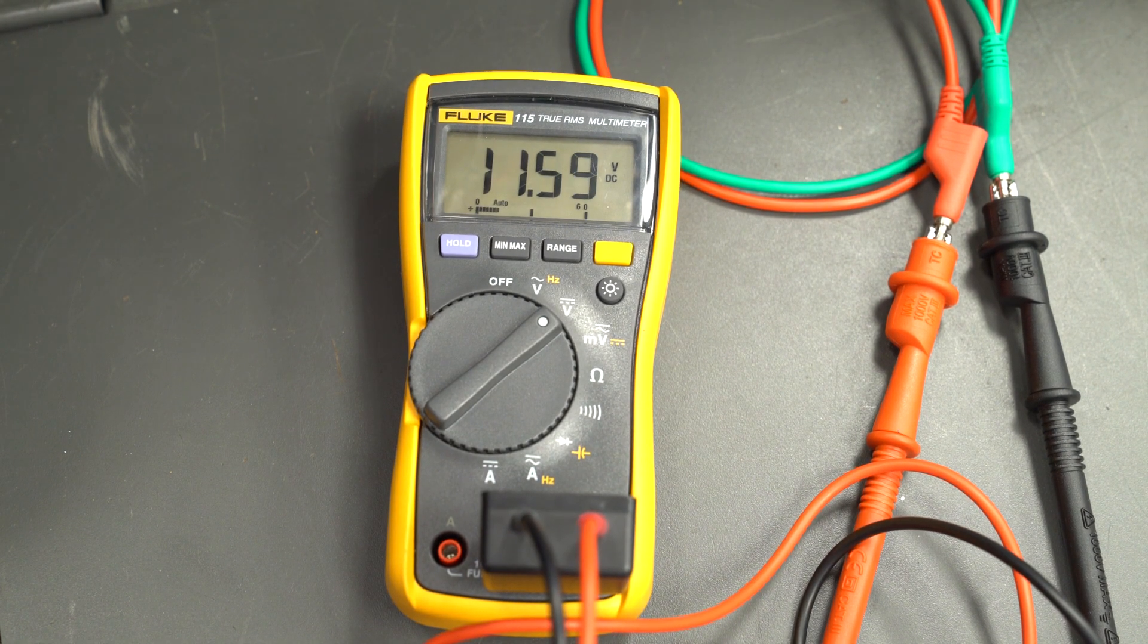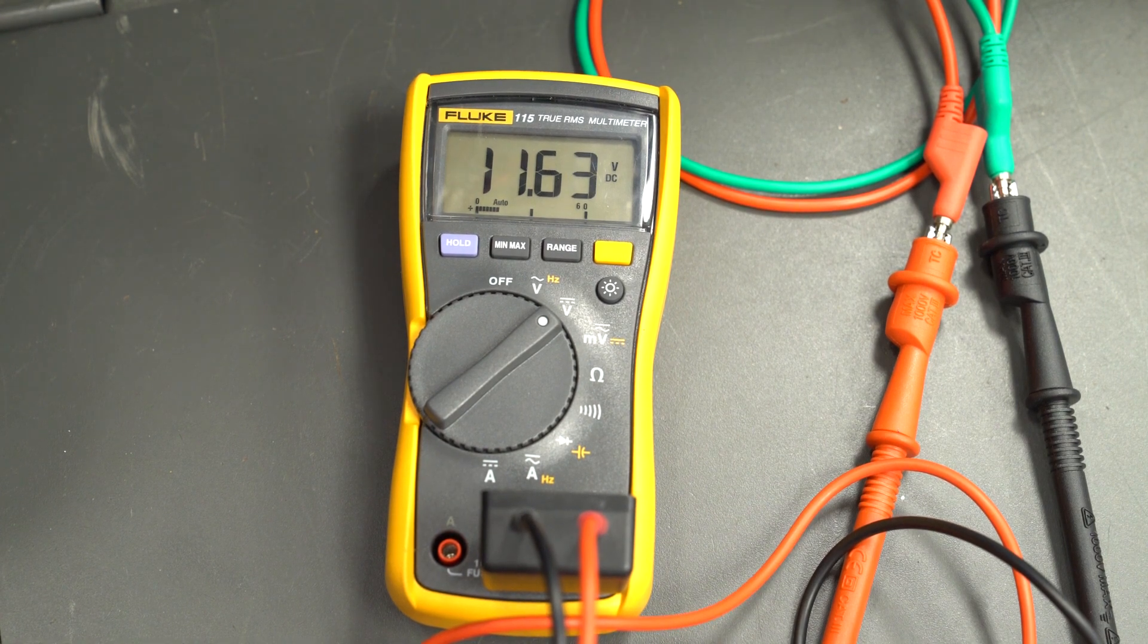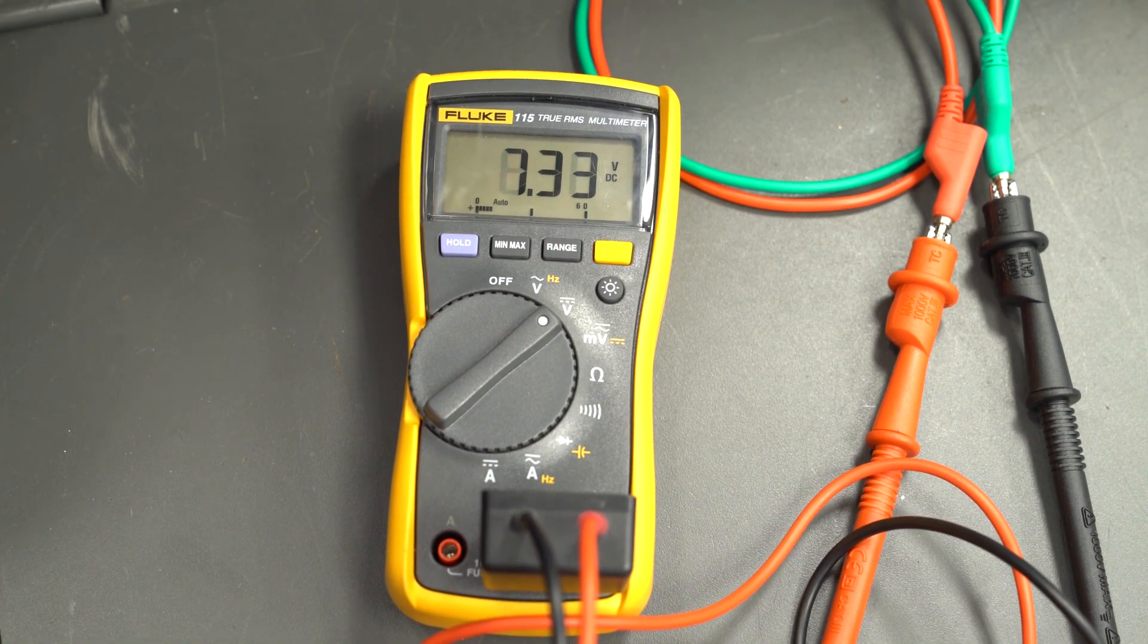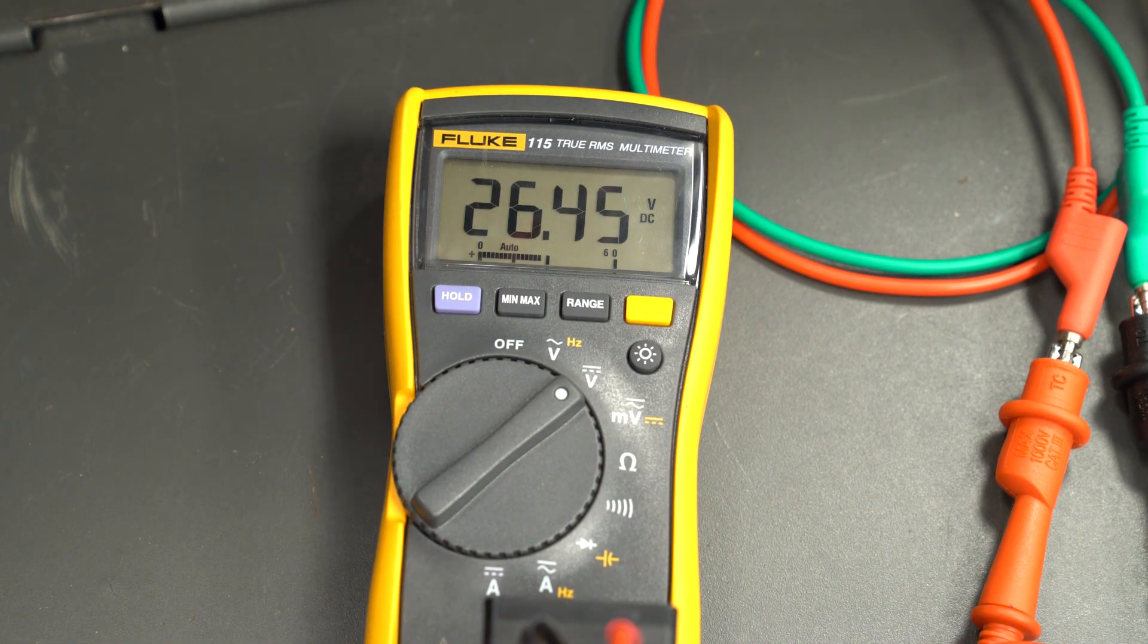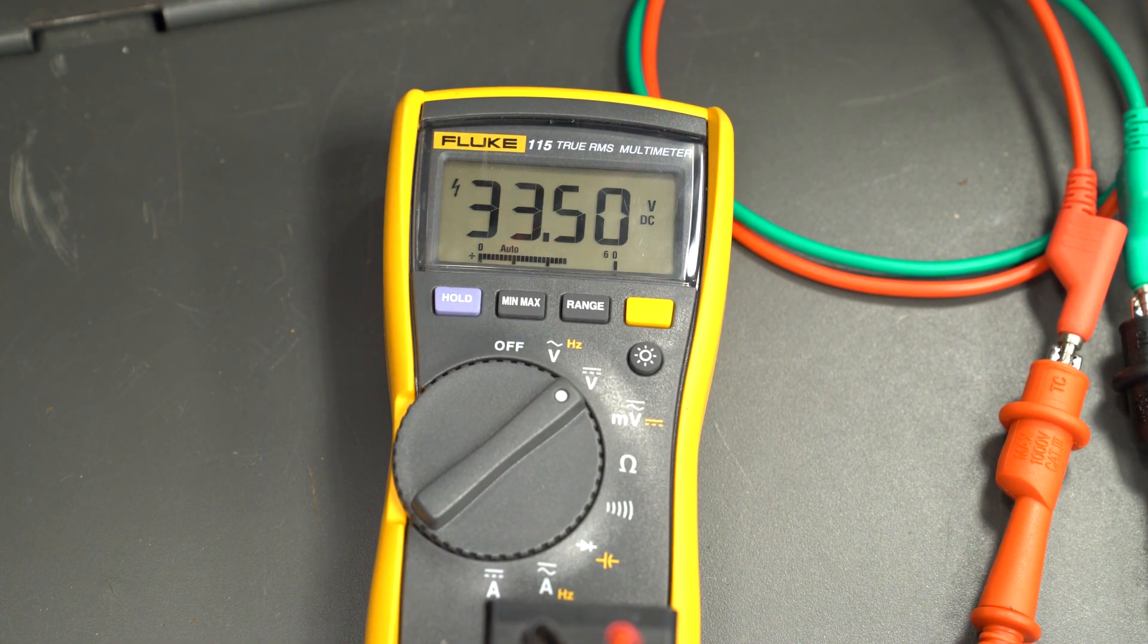For a no-start problem, you should get around 10 volts AC during cranking. Be sure the battery is fully charged. At idle, you should get around 25 volts and going up to over 50 volts at full throttle.